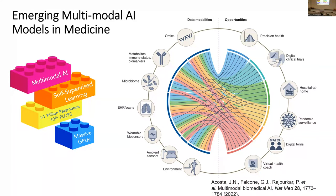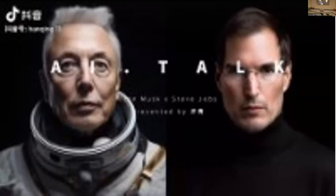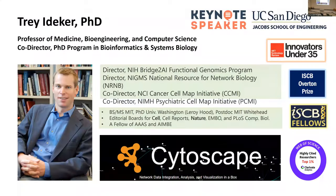I would like to introduce our keynote speaker today, Dr. Trey Ideker. I've known Dr. Trey Ideker for more than 20 years. He's currently a professor of medicine, bioengineering, and computer science at UCSD. He's co-director of UCSD's PhD program in bioinformatics and systems biology, and director of the NIH Bridge to AI functional genomics program, national resource for network biology center director, and many other NIH and NCI center director roles related to cell mapping.